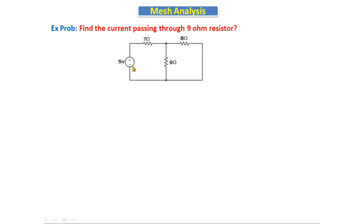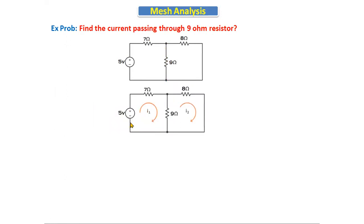Here there is only one voltage source. The question is: find the current passing through the 9 ohm resistor. I am taking loop one in the clockwise direction and loop two also in the clockwise direction, as there are two closed loops. In loop one, I1 current is flowing; in loop two, I2 current is flowing. Apply KVL in loop one.